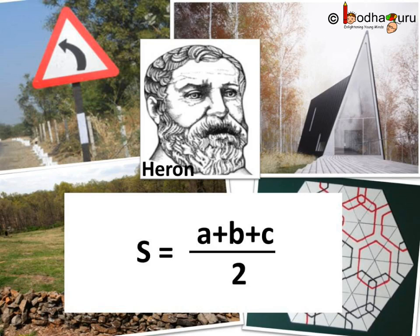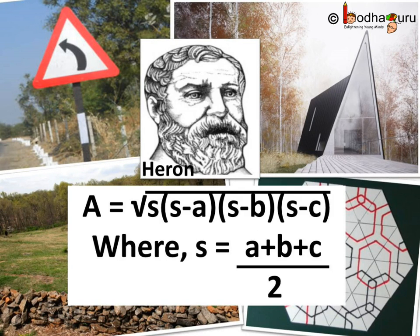So, we say S is equal to A plus B plus C by 2, where A, B and C are the three sides of the perimeter of a triangle. Then, according to Heron's formula, area of the triangle, denoted by A here, is square root of S multiplied by S minus A into S minus B into S minus C, where S is equal to A plus B plus C by 2, that is, it is the semi-perimeter.